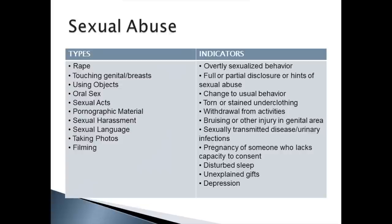Further indicators of sexual abuse include changes in usual behaviour, visible signs such as torn or stained underclothing, withdrawal from activities, bruising or other injuries in genital areas, sexually transmitted diseases, urinary infections, pregnancy of someone who lacks capacity to consent, disturbed sleep patterns, unexplained gifts, and people suffering from depression.